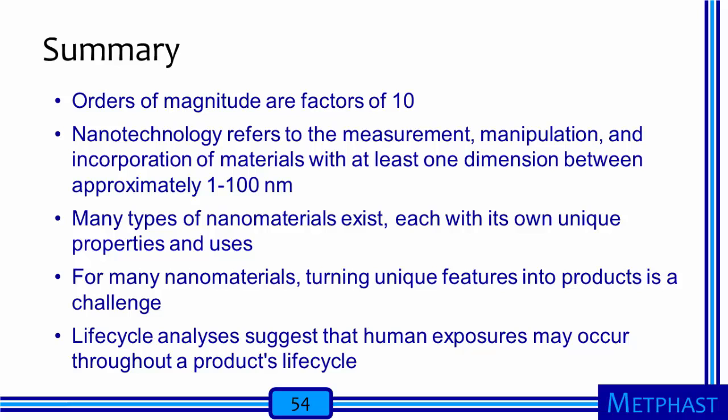To summarize the main points of this module: orders of magnitude are factors of 10 that help us think about the relative dimensions of materials. Nanotechnology refers to the measurement, manipulation, and incorporation of materials with at least one dimension between approximately 1 and 100 nanometers. Many types of nanomaterials exist, each with its own unique properties and uses. For many nanomaterials, turning unique features into products is a challenge. There is still a lot of research to be done on the properties and uses of nanomaterials in both industry and academia, presenting many opportunities for worker exposures in research laboratories as well as in larger scale product development and production. Lifecycle analyses suggest that human exposures are possible throughout a nanoproduct's lifecycle, and there are more and more opportunities for the public to be exposed to engineered nanomaterials.